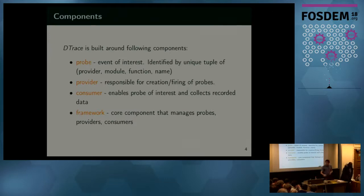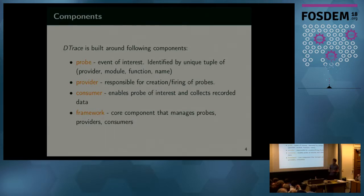The key components of the D-trace architecture is a probe. Do not mix it with a K-probe or a U-probe. A probe in D-trace is just an event, identified by a unique tuple which consists of provider name, module name, function, and name of the probe.